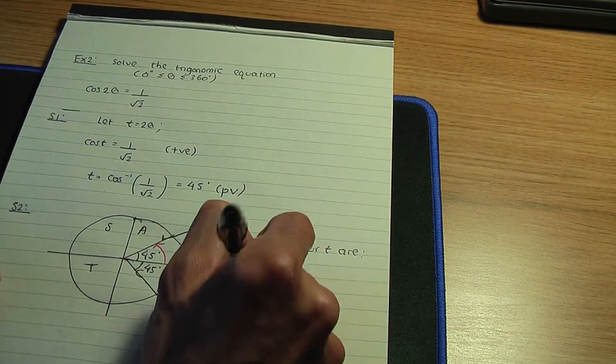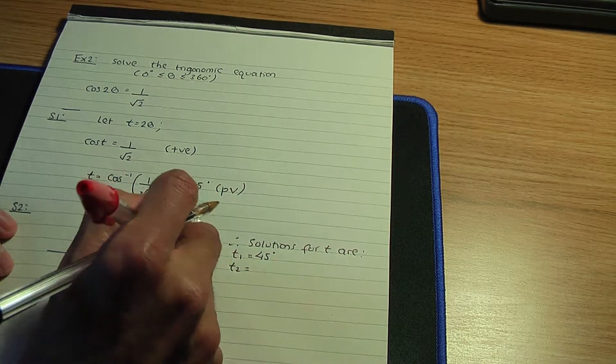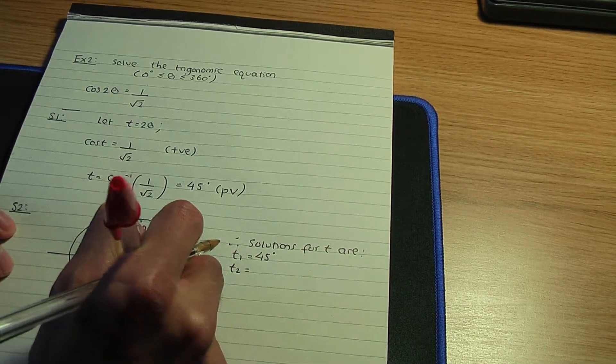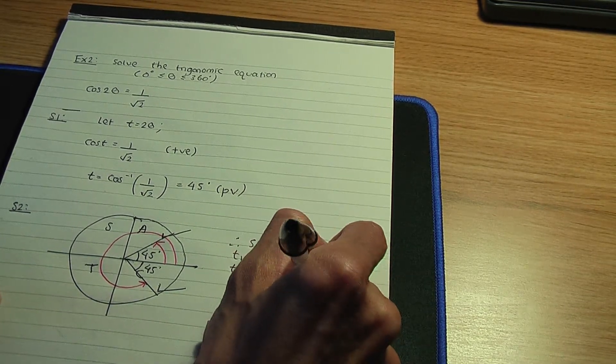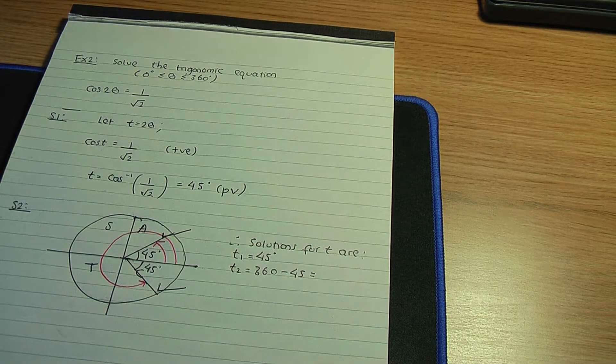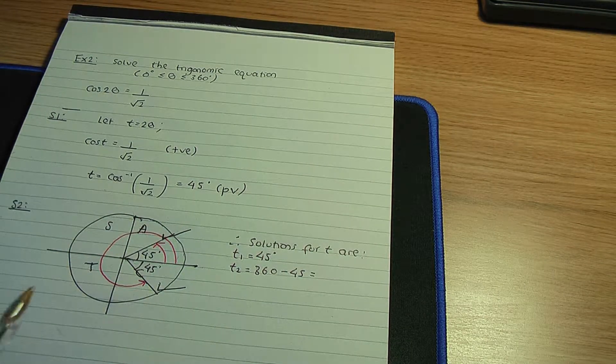And the second solution being t2, again from the initial line in the anticlockwise direction until you hit that second line, so that being 360 minus 45 degrees. One revolution minus this acute angle of 45 degrees.